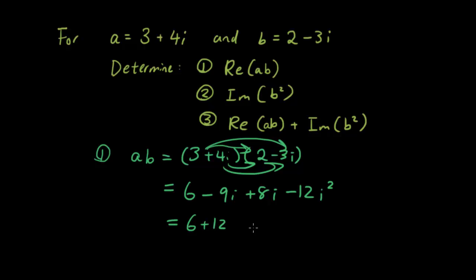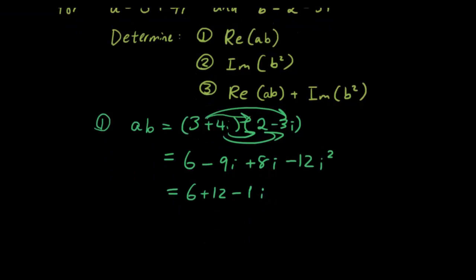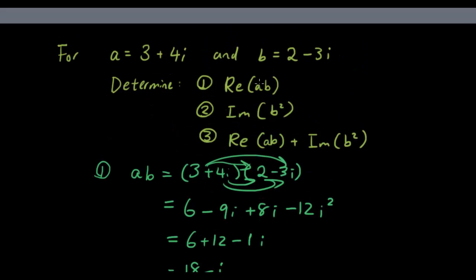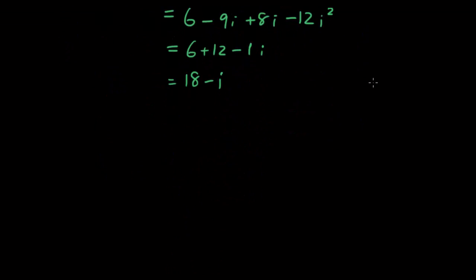So it's 6 plus 12, and then minus 9 plus 8 gives minus 1i. And 6 plus 12 is 18, so we get 18 minus i. So that's the answer. What the question wants is the real component of ab, which is just the real part — and it's 18.